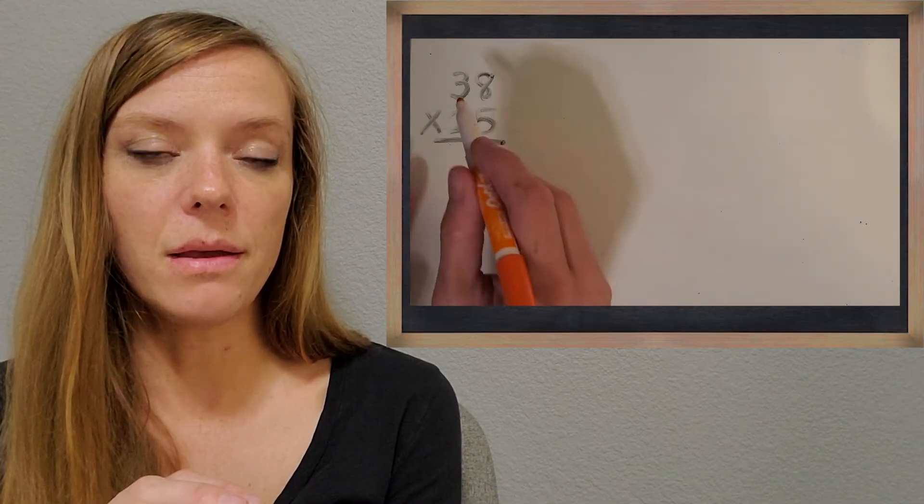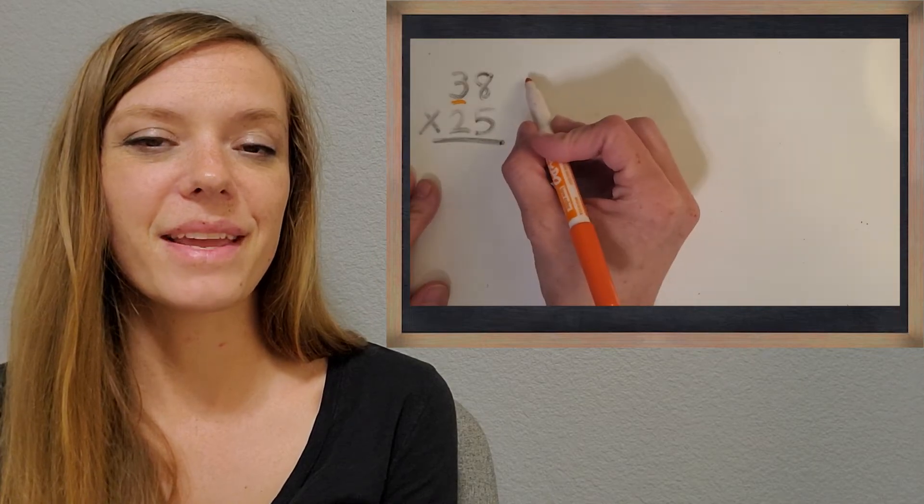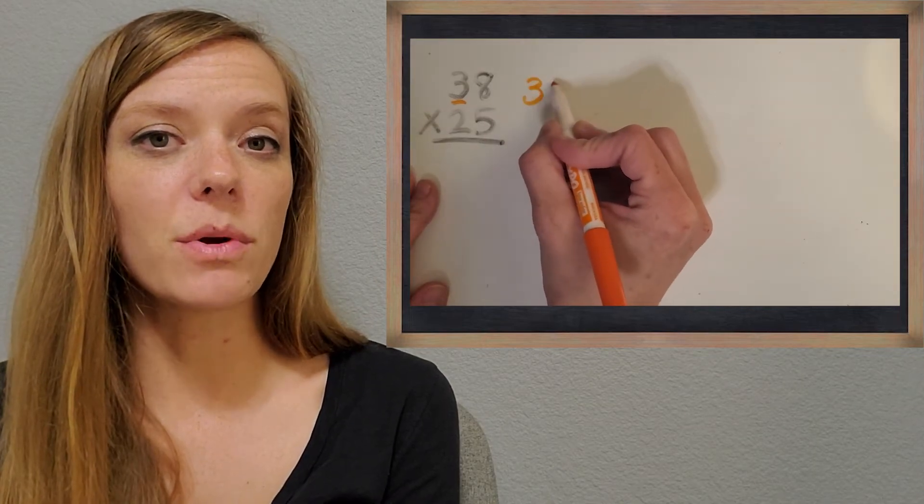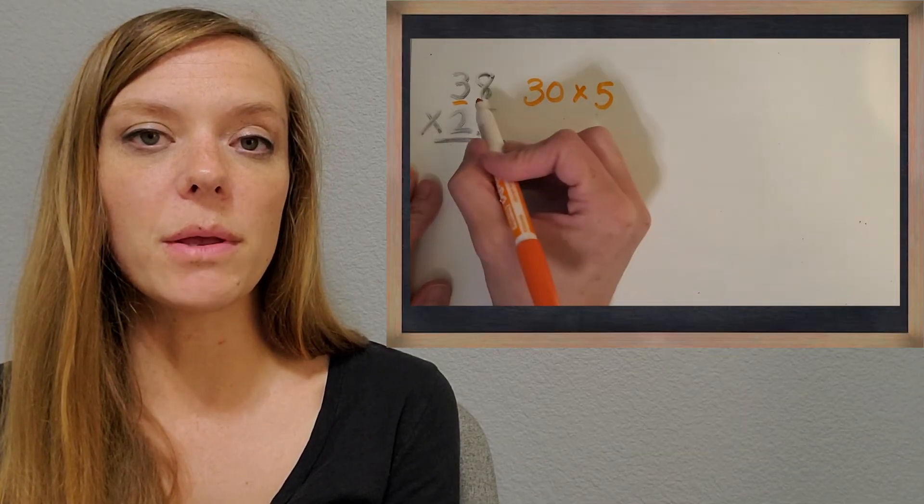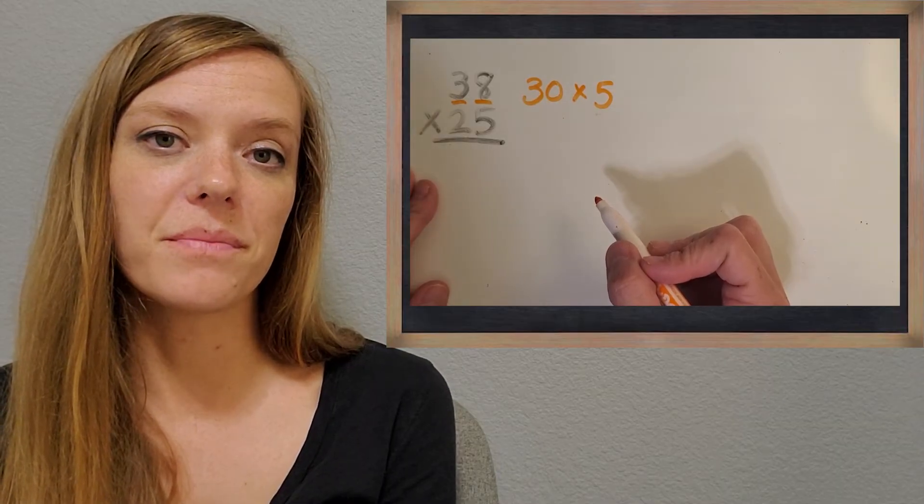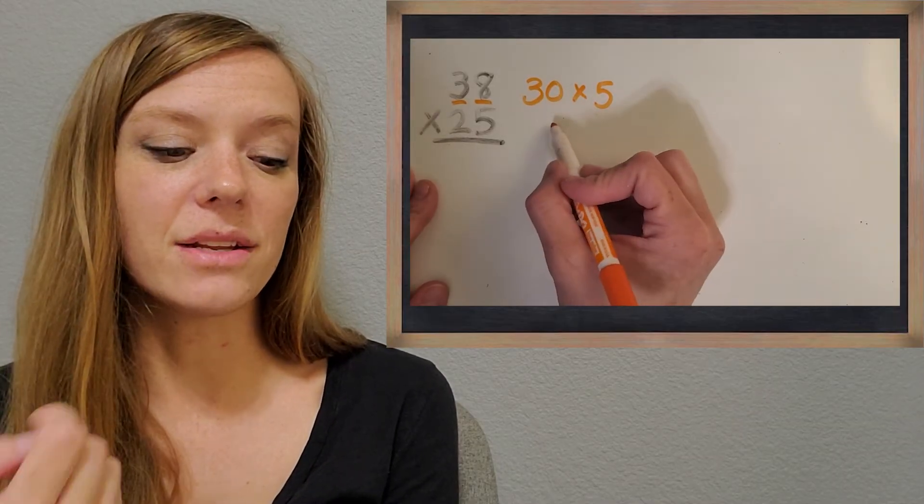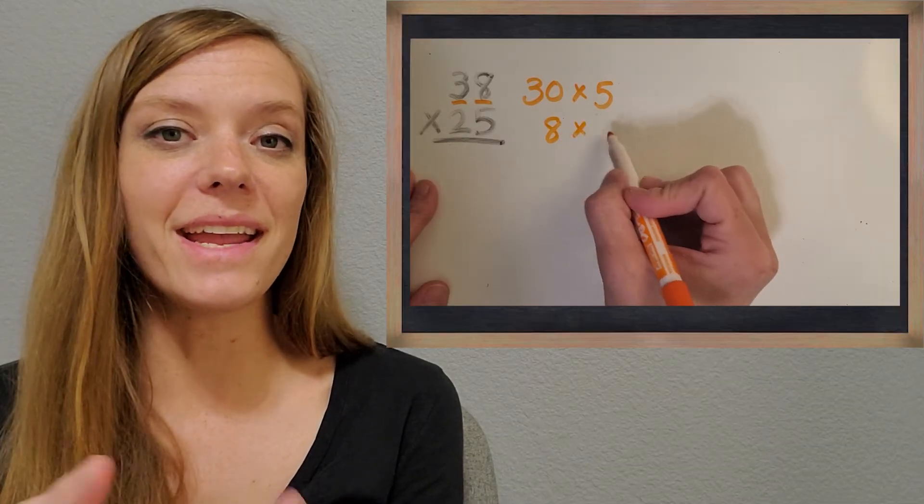So we're going to focus on the three. How much is the three worth? Awesome, 30. So we're going to be doing 30 times five. And we're going to be working with that eight. So what is that eight really worth? You got it. Just eight. It's in the ones place. So we're going to be doing eight times five.